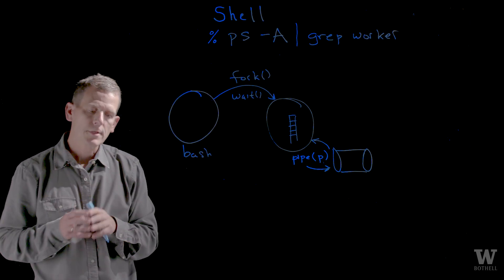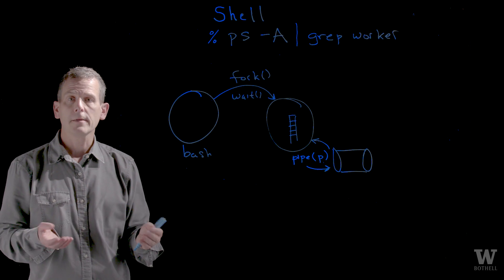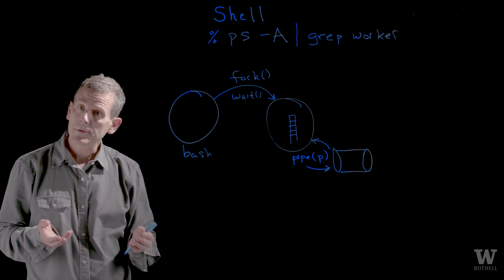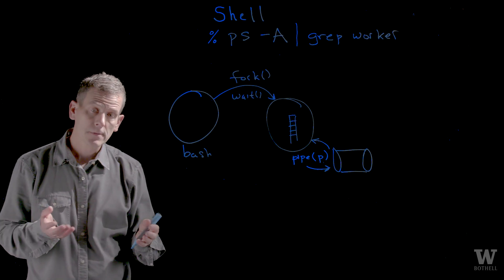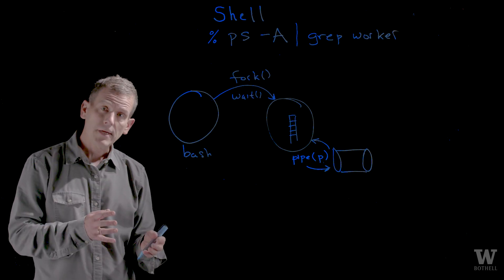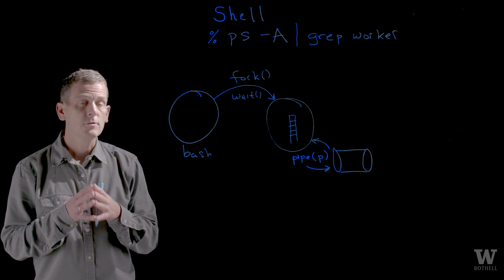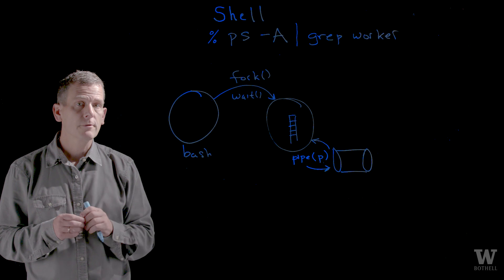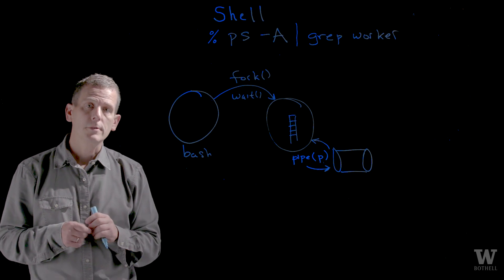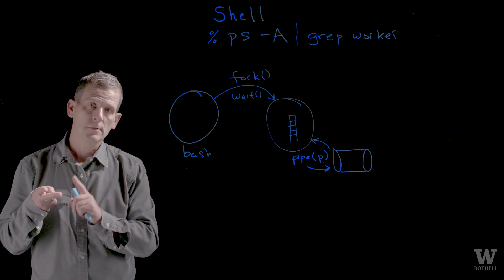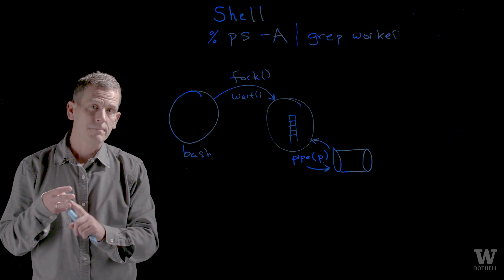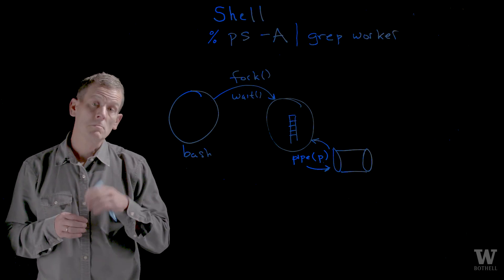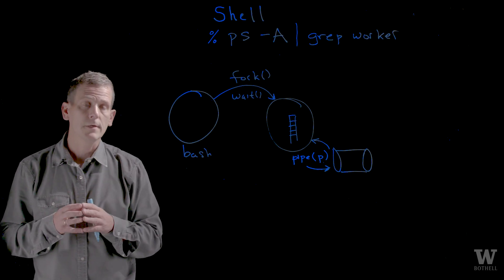The file descriptors point to open files, open sockets, possibly pipes, standard in, standard out. In fact, when you start every process, the first three file descriptors are set to point to standard in, standard out, and standard error. You may know these as cin, cout, and cerr in C++.